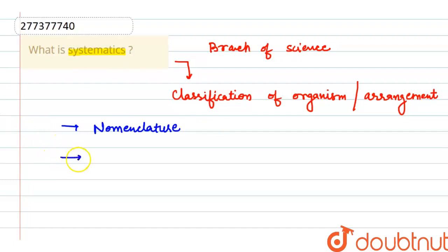Also, systematics deals with evolutionary relationships. That means with the course of time, how evolution occurred, which animal is linked to which one and how. This is all under the branch systematics.